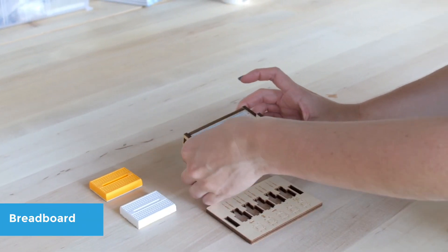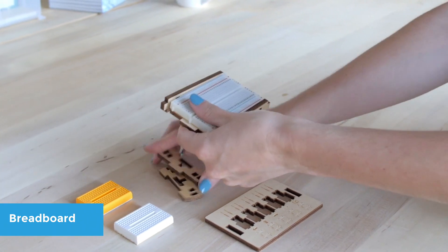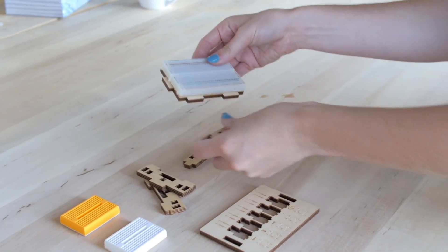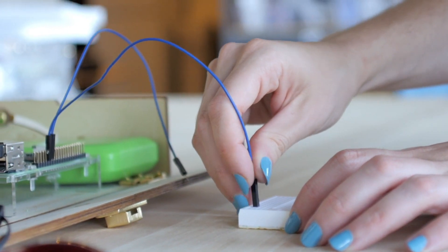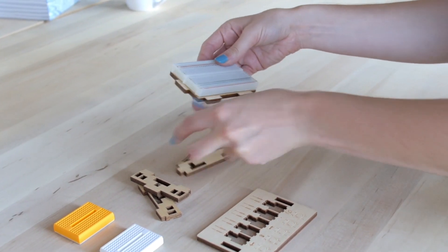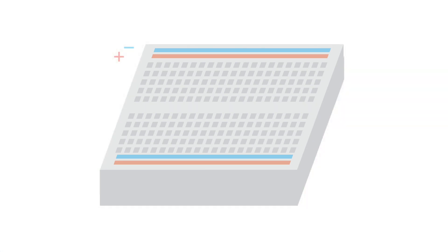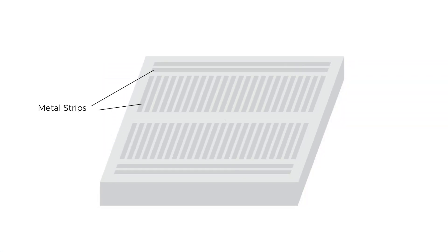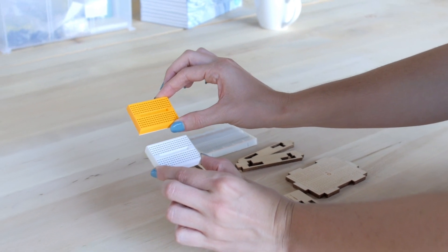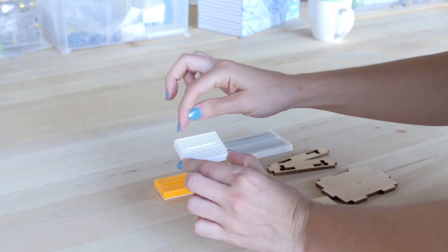The breadboard is a tool to connect inputs and outputs to the Raspberry Pi. It is classically used in electronics for less permanent connections when you do not want to do things like solder. Inside the breadboard are metal strips that allow current to flow horizontally and vertically depending on where you are placing a pin. The mini versions of these breadboards only do this in one direction.